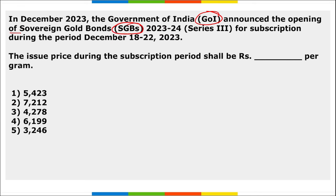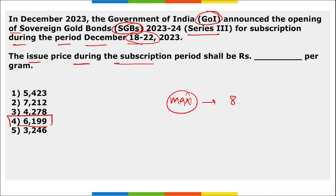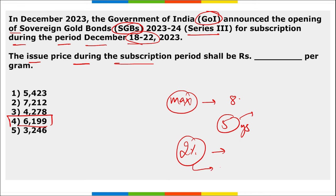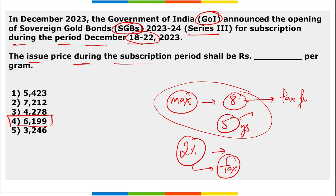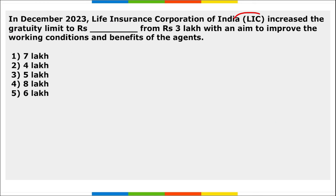Next: the Government of India announced the opening of Sovereign Gold Bonds Series III for subscription during December 18 to 22, 2023. The issue price shall be 6,199 rupees per gram. The maximum period for these bonds is eight years; after five years you can withdraw them. You will receive 2 percent interest every year — taxable — but the maturity amount at the end of eight years is tax-free.